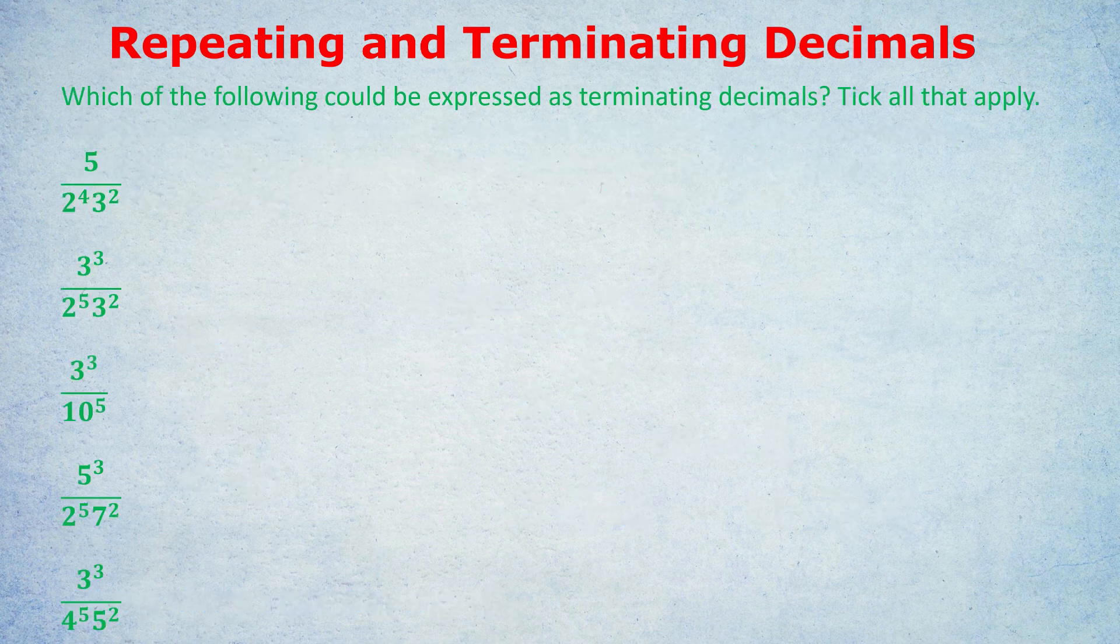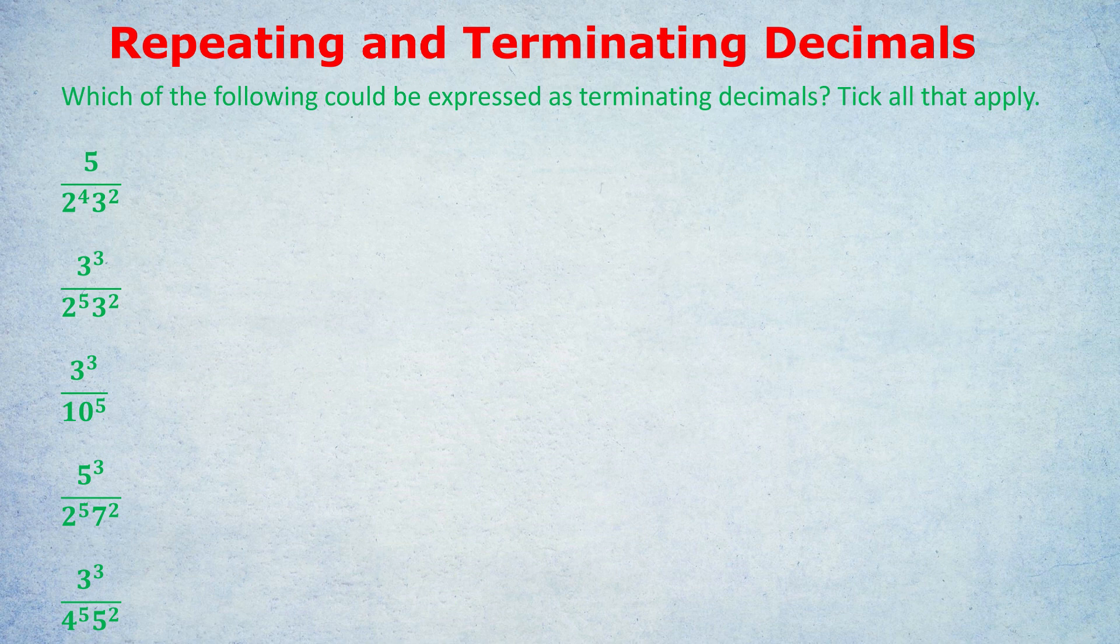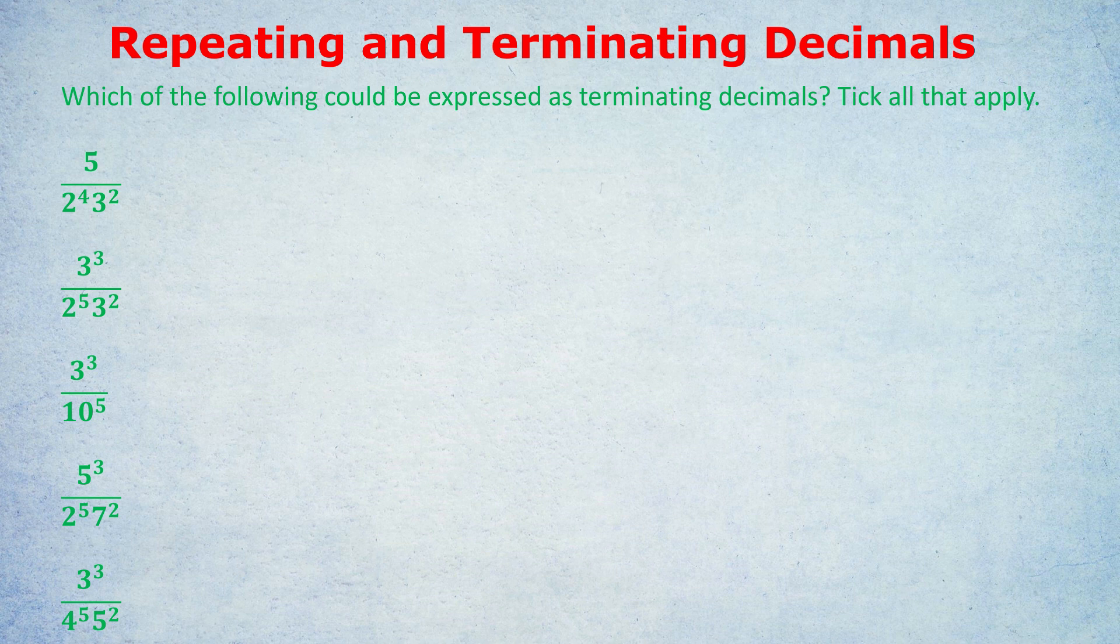Which of the following could be expressed as terminating decimals? Tick all that apply. Now, even those students in the GRE who are thinking, well, I could put this into a calculator. First of all, we could have made the numbers much bigger. So it's even harder to put in the calculator. And second of all, that would take ages. What if you only have a minute left in the test? What's the shortcut that can give us the answer in 20 to 30 seconds? I'm betting, again, the majority of you wouldn't know how to do this.